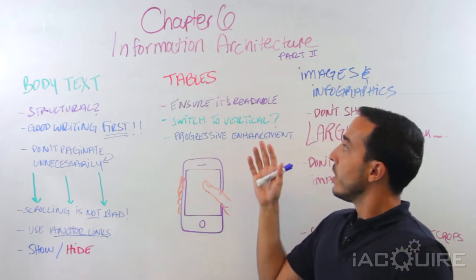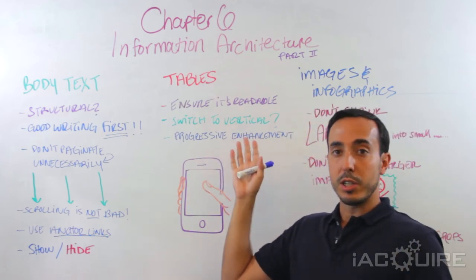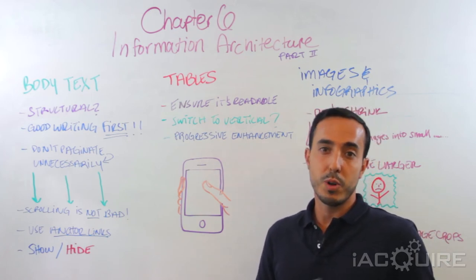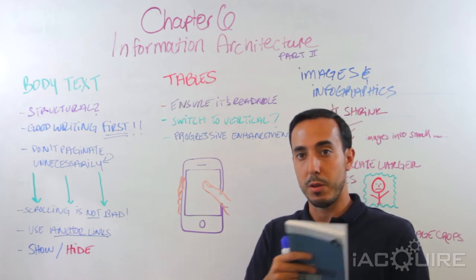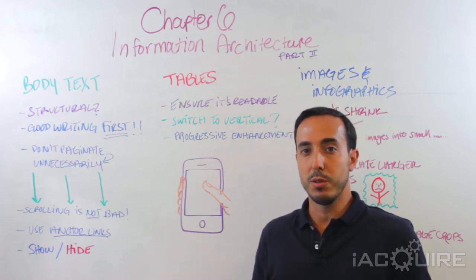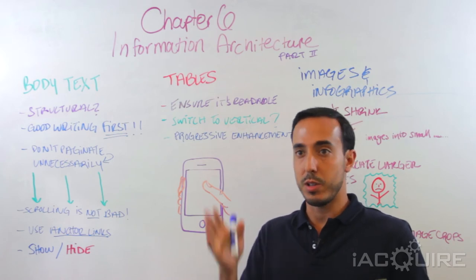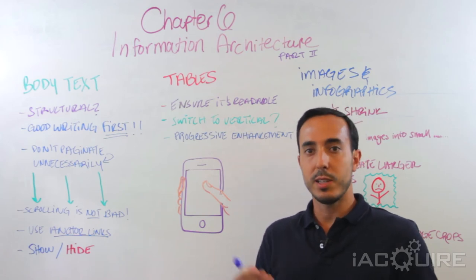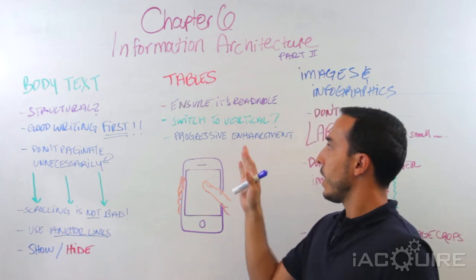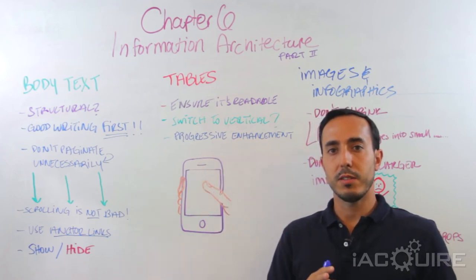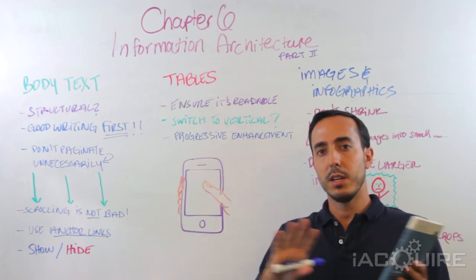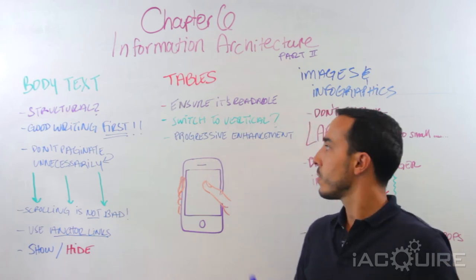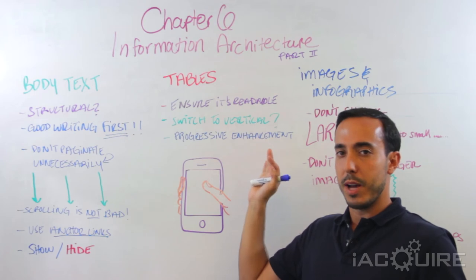The next topic she covers is tables. These are really annoying because tables are pretty much meant to be read on a widescreen monitor — they're meant to be read horizontally. A lot of times we see websites getting this really wrong, where they just chop the table off midway and you're not sure what the table even says or where to scroll. One solution is switching the entire content of the table so that instead of being laid out horizontally, it's laid out vertically.